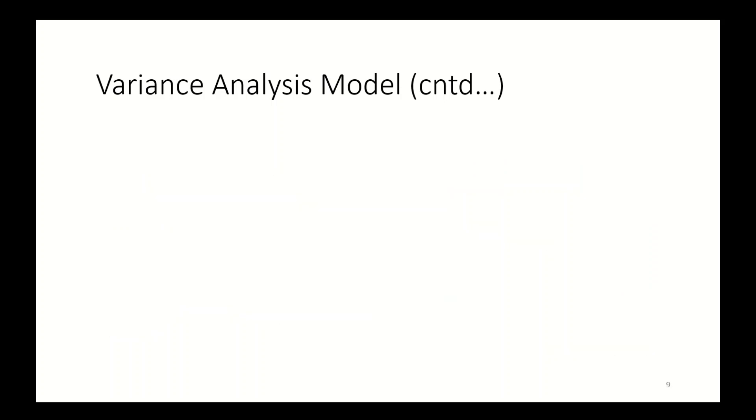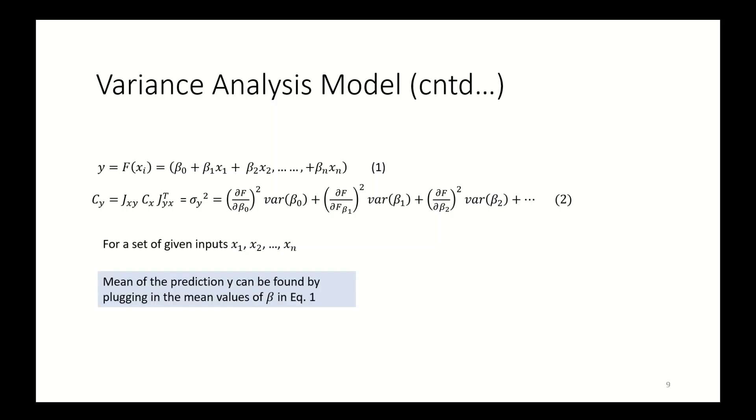So, the basic MLR equation or multi-linear regression equation is shown in equation 1. And the variance of Y can be found using equation number 2. Now, for a set of given inputs, mean of the prediction Y can be found by plugging in the mean values of beta in equation 1. And variance of the prediction Y can be found by plugging in the variance of beta in equation number 2.